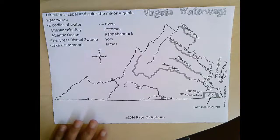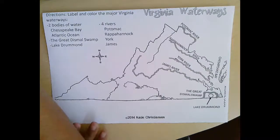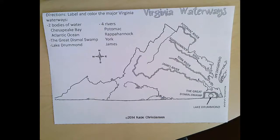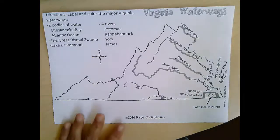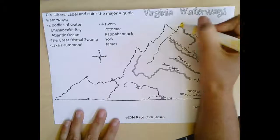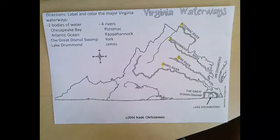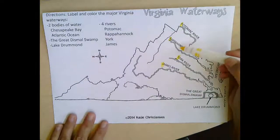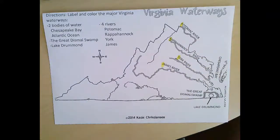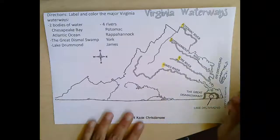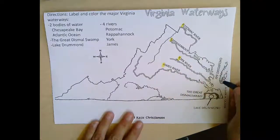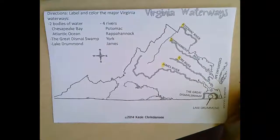Now we talked about the four rivers, but there's more that we have to know about these rivers. Yesterday you watched a video and made an anchor chart and learned how to label these rivers. Using the mnemonic device 'Principles Race Yellow Jaguars,' you can label the map with the correct order of the rivers. One thing you need to know is that all rivers flow downhill into the Chesapeake Bay.